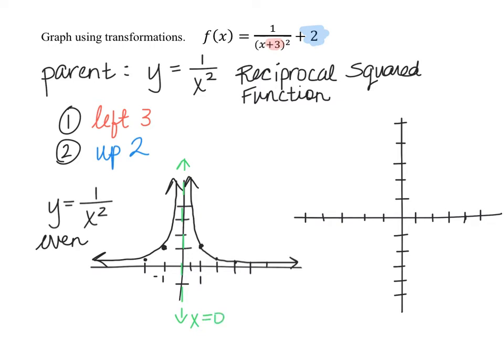So for our new function, if we're going to shift left 3, then our vertical asymptote will move left 3 as well. So shifting the vertical asymptote left 3 means we have a new vertical asymptote at x equals negative 3. I always recommend you graph these asymptotes with a highlighter or a different colored pen, because remember, they're just guidelines for us for the graph.